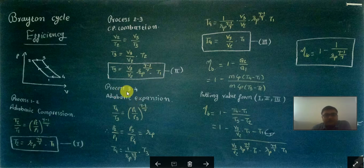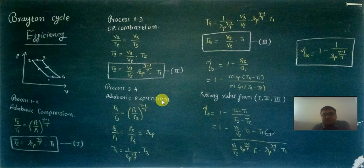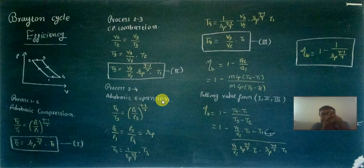Now for process 3 to 4, which is the adiabatic expansion process. Again for an adiabatic process, the equation to use is: T3 divided by T4 equals P3 by P4 raised to gamma-1 upon gamma, which also equals V4 divided by V3 raised to gamma-1. Note that T4 and V3 are in reverse proportion to each other.